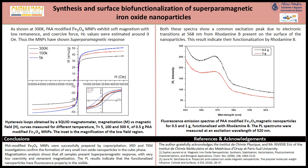To confirm that our nanoparticles are functionalized with rhodamine B, we analyzed the two samples with fluorescence spectroscopy. From the figure, the characteristic peak of rhodamine B appears on the spectrum at 568 nanometers. This peak signifies that rhodamine B was adsorbed on the surface.